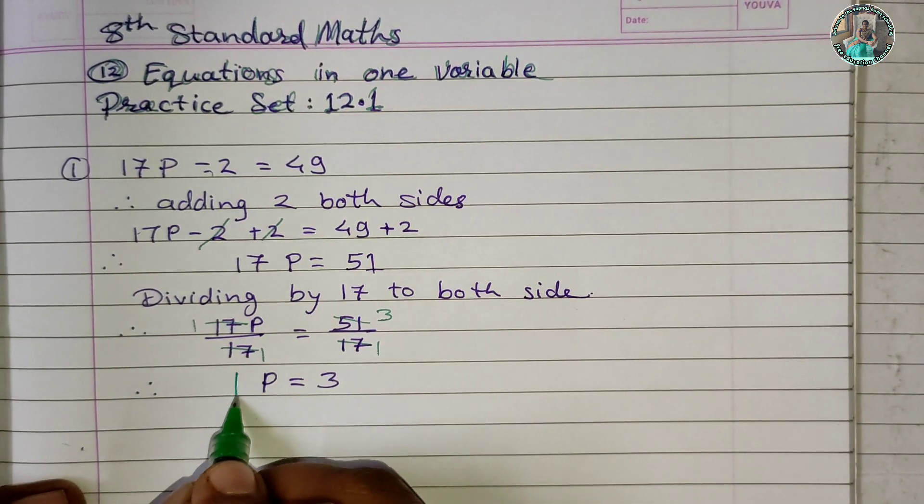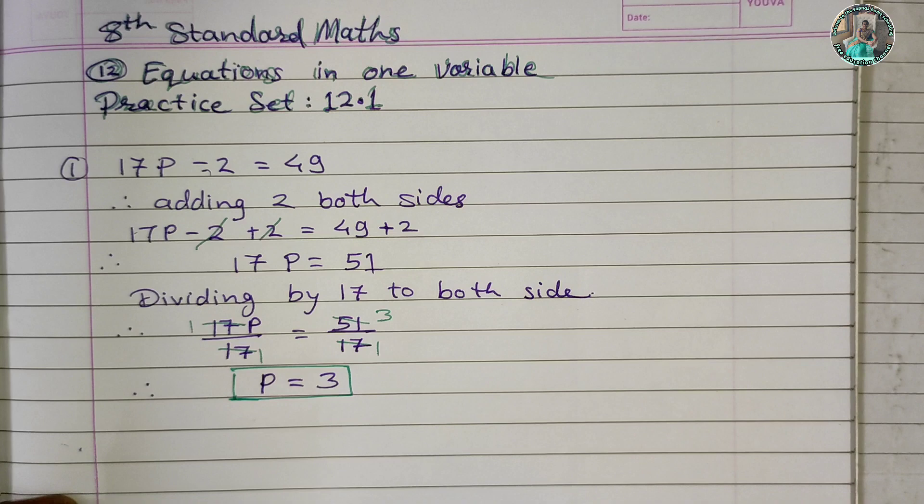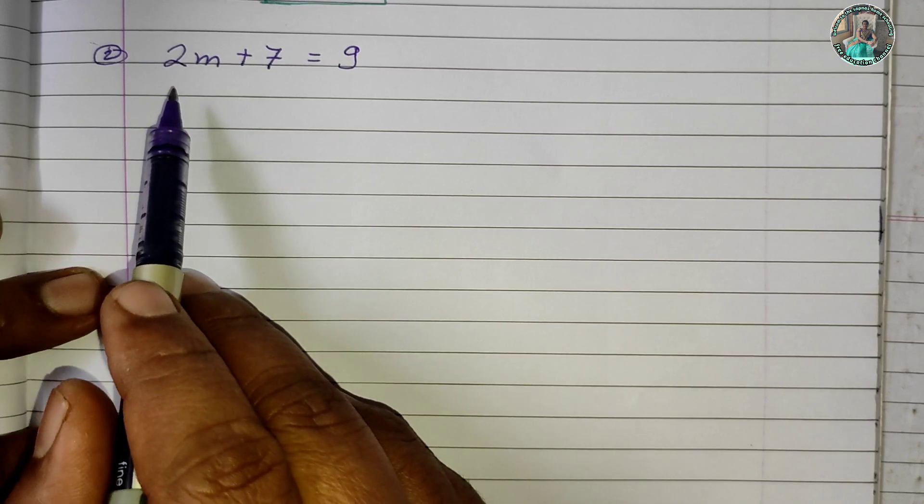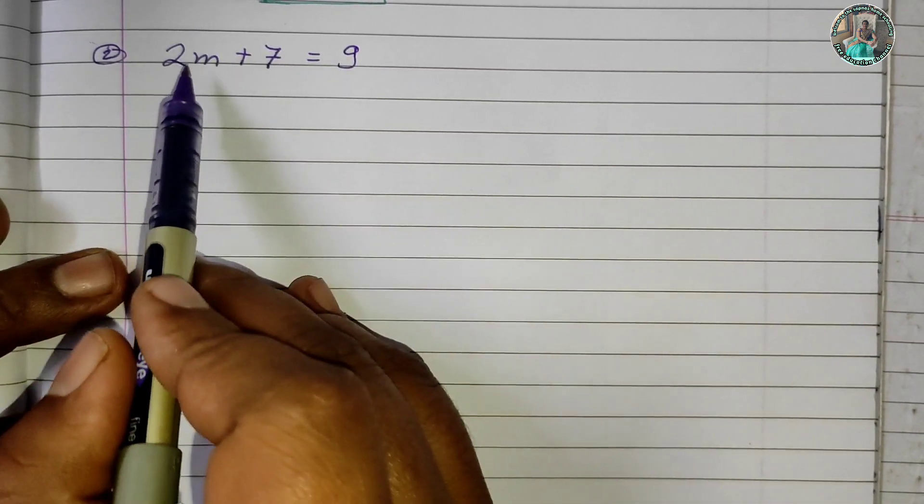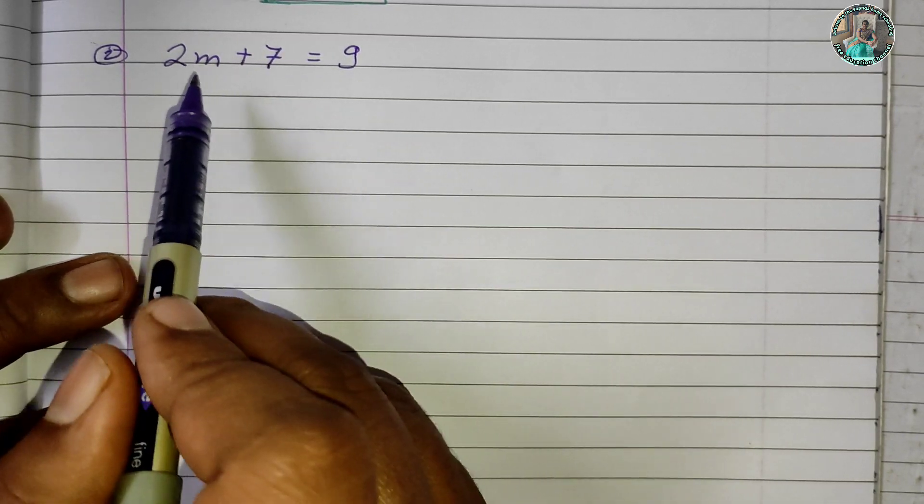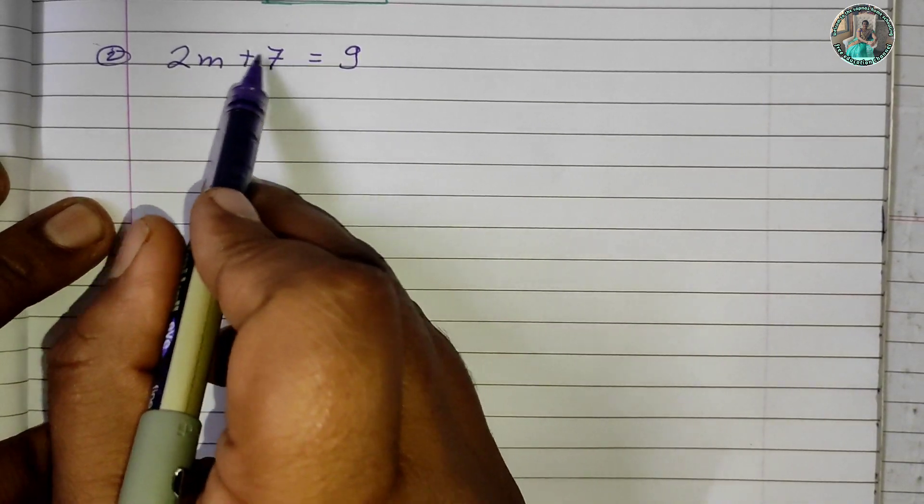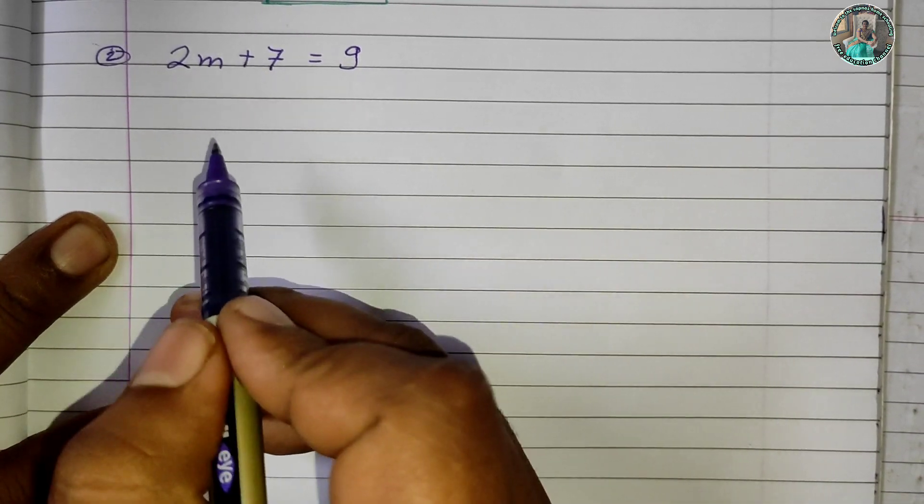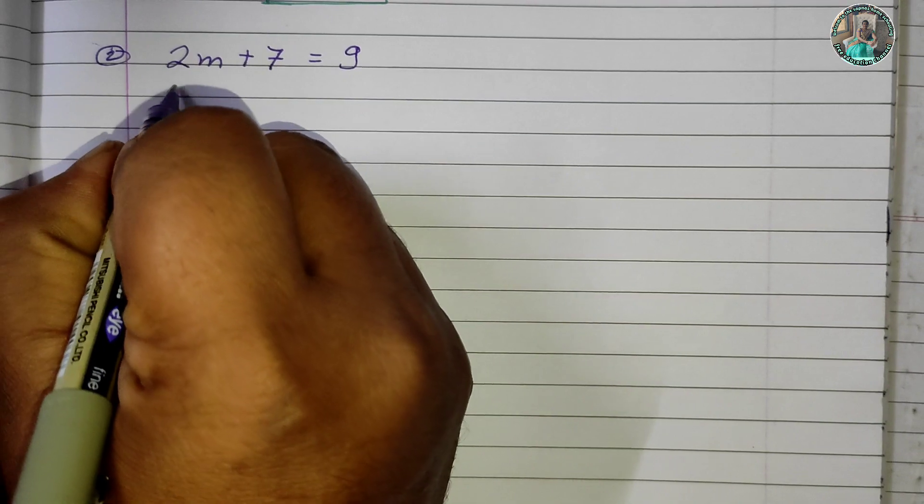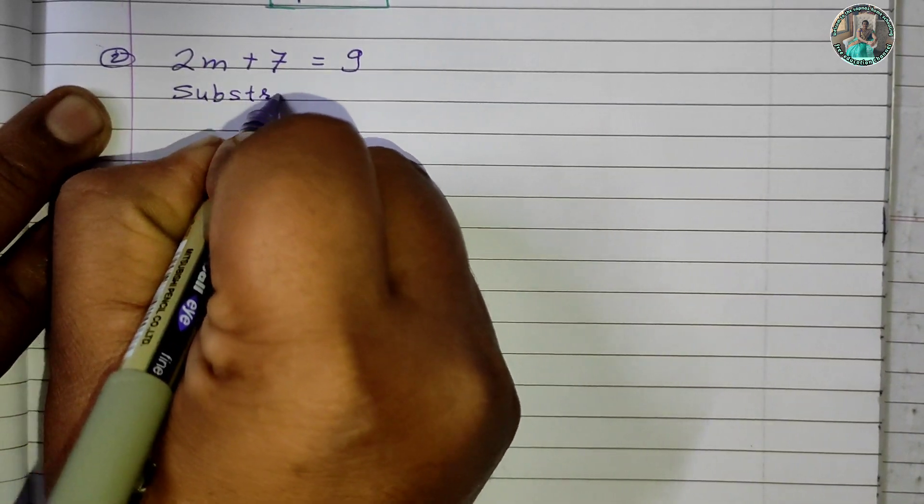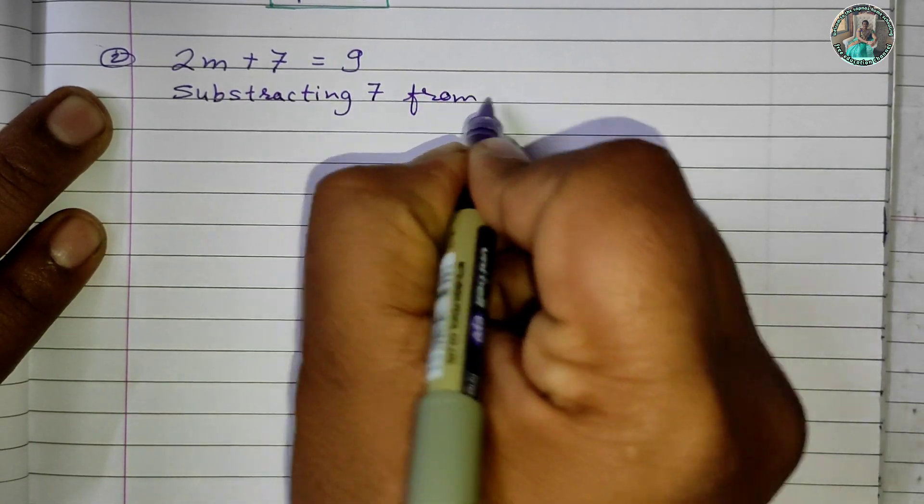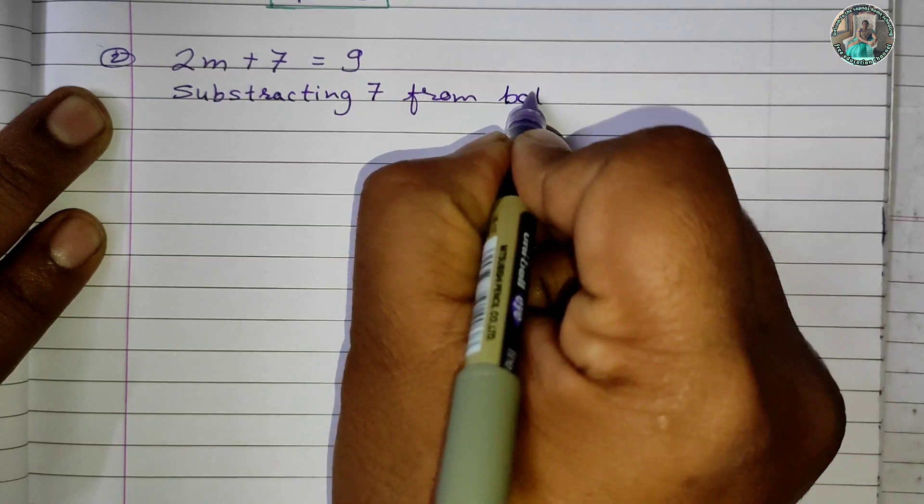Question 2: 2m + 7 = 9. We need to find the value of m. We have +7 on the left side, so we subtract 7 from both sides.